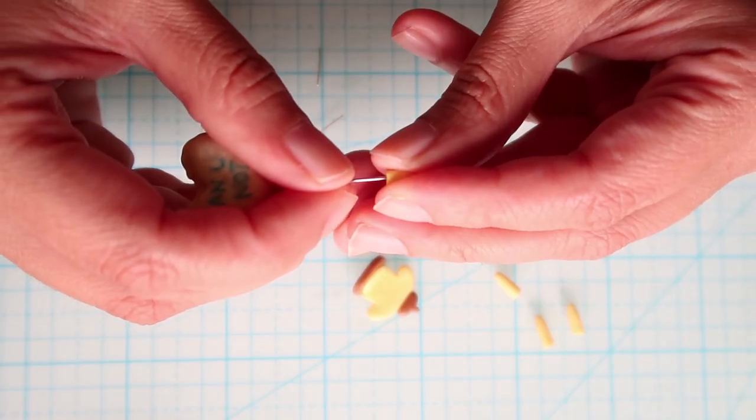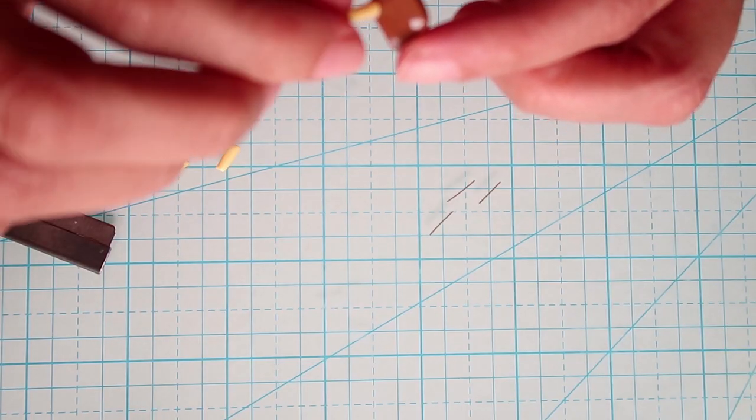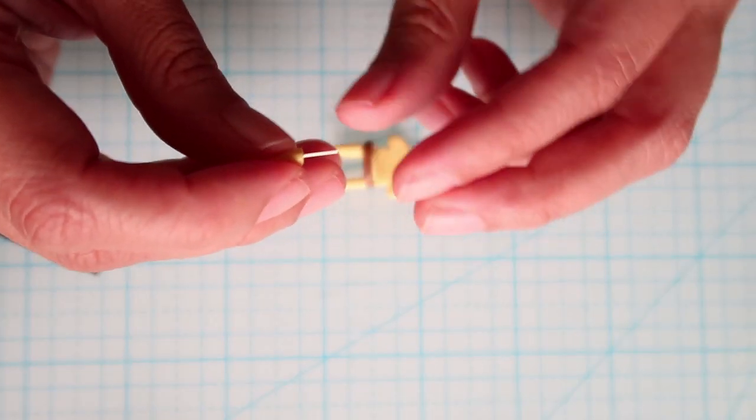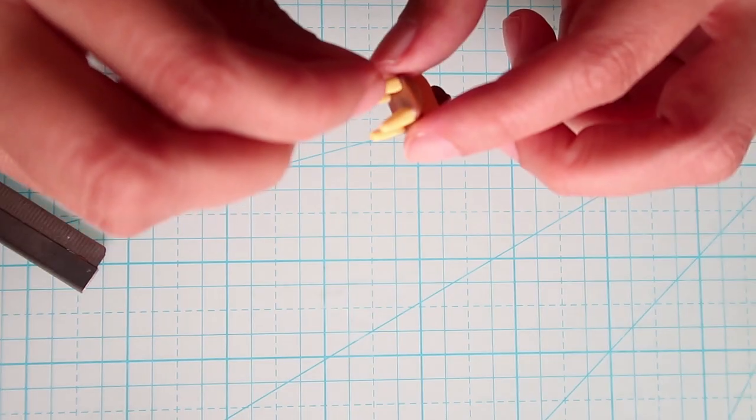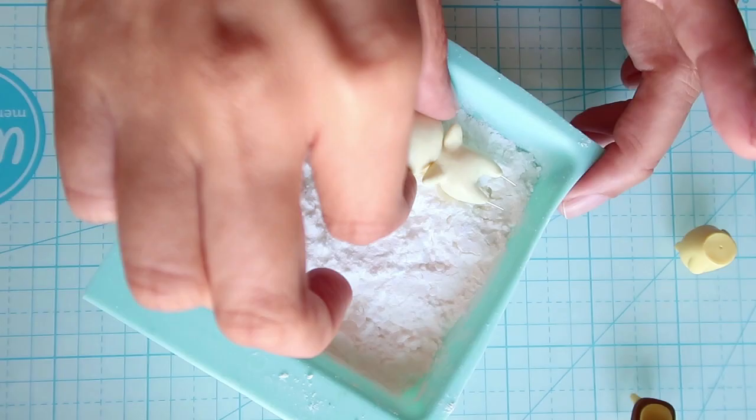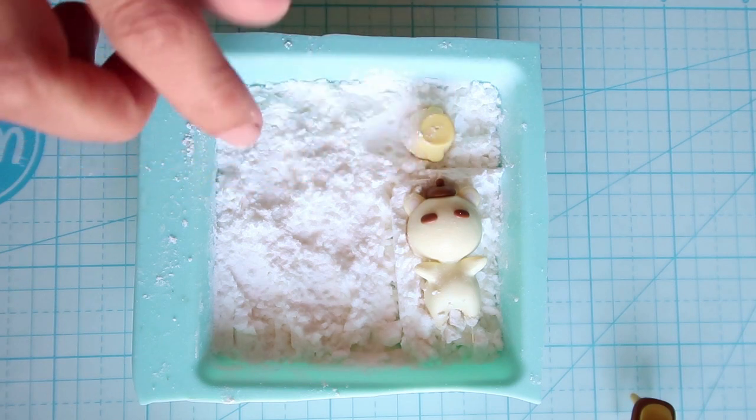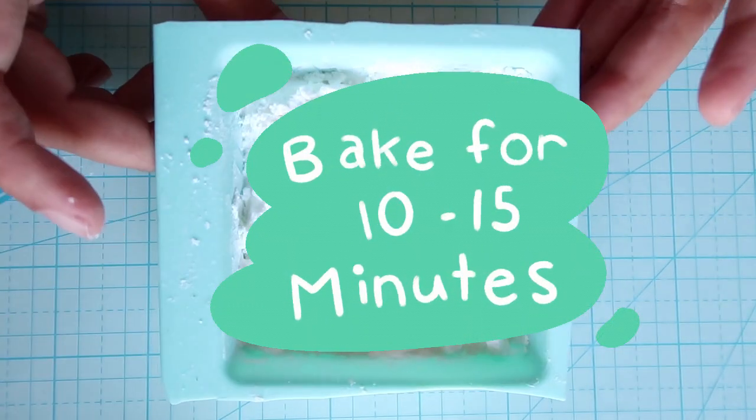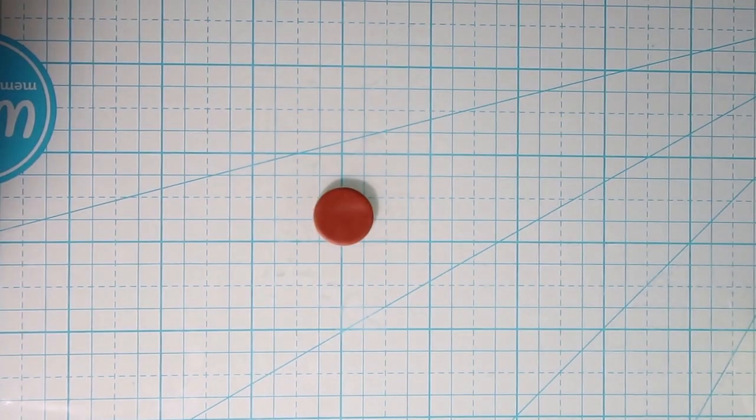Next make holes in each of the chair legs and insert a little piece of wire to attach it to the chair and then attach them on using TLS. And this is what it looks like. And now you can place all of these pieces on a baking tray, bake the Marty and the chair for the full time on the packet and bake the table for just 10 minutes so that it's easier to work with.